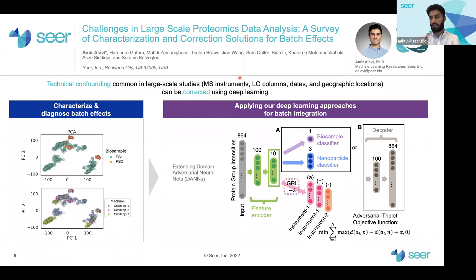Technical confounding can be introduced as samples are run across different mass spec instruments, LC columns, dates, geographic locations, and other covariates, for example, in large-scale cohort studies.